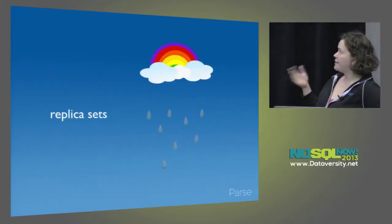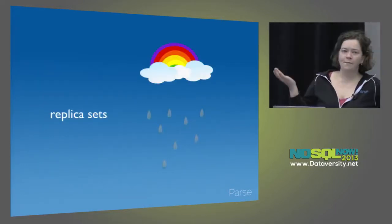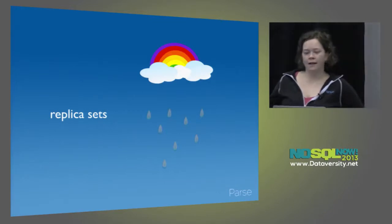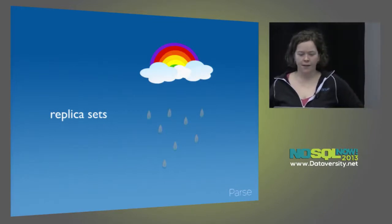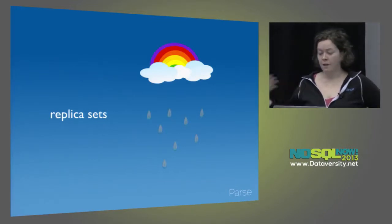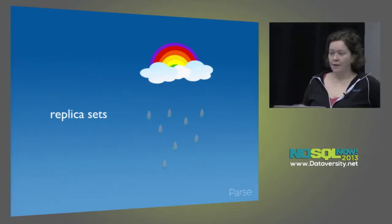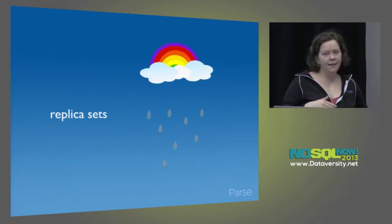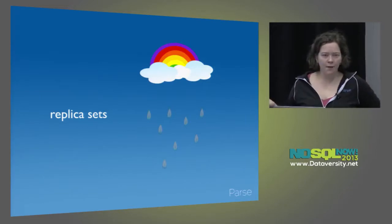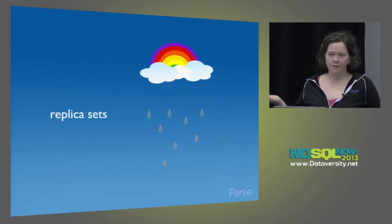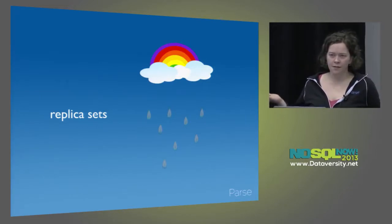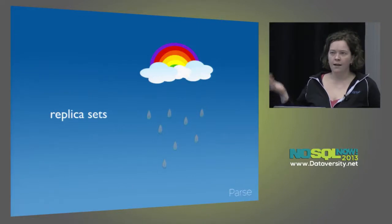Let's start with replica sets. This is the basic building block of high availability MongoDB, and you should always use replica sets. Technically you can run Mongo in a master-slave configuration, but I really don't know why you ever would.